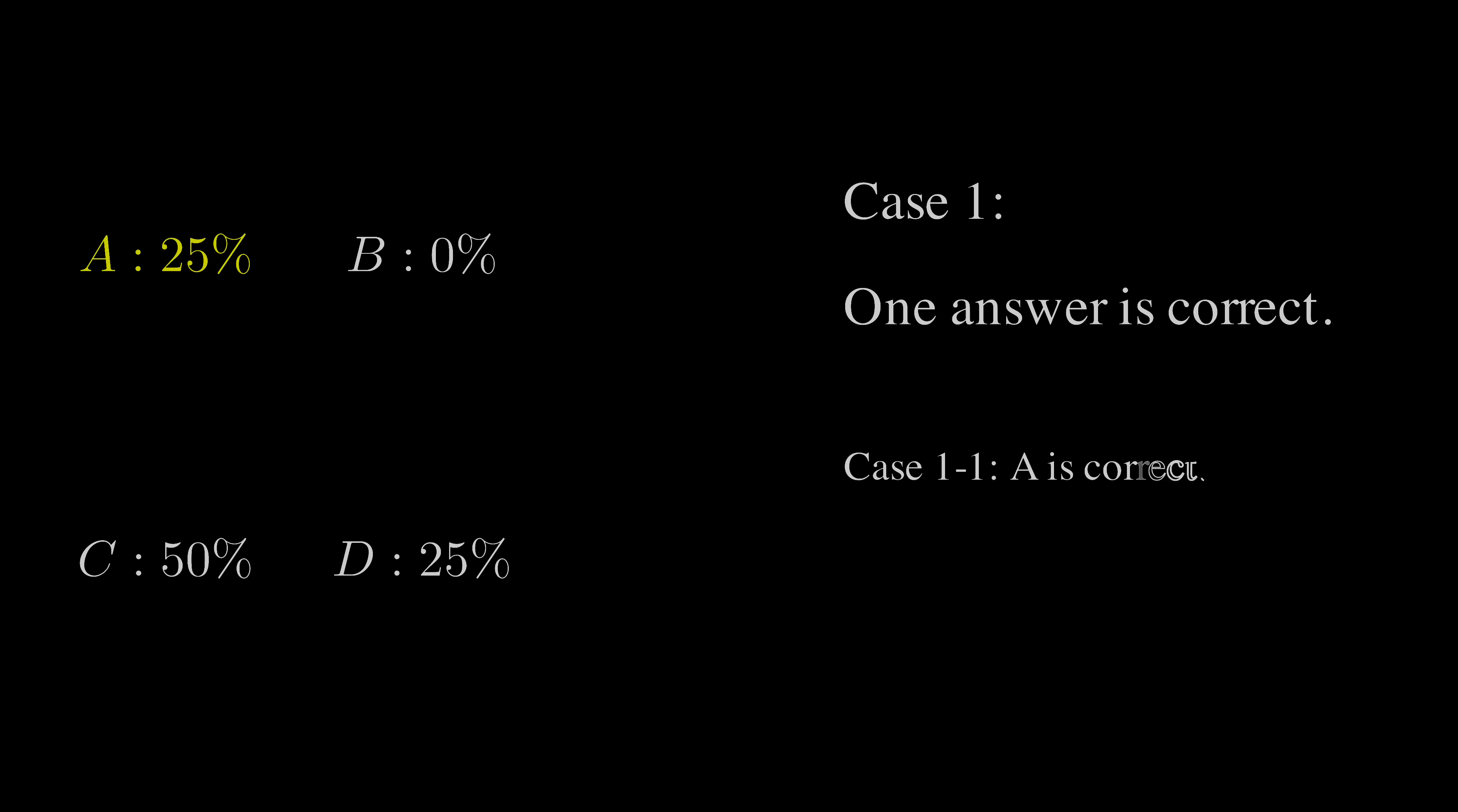Can that answer be A? Nope. Because if A is correct, then D is also correct. But if A and D are both correct, it directly violates our assumption that there is only one correct answer.